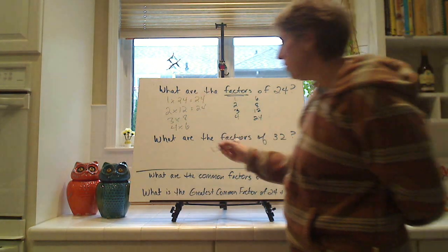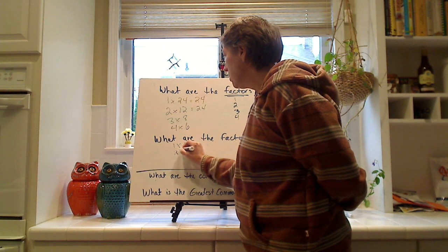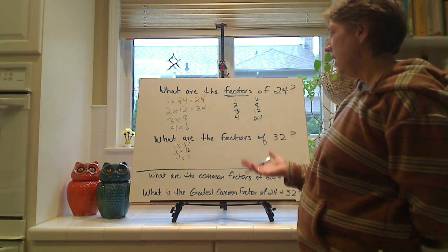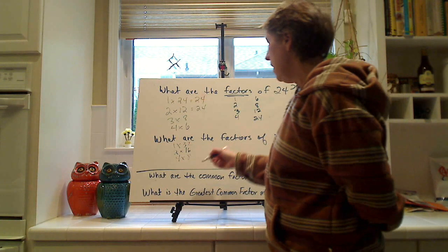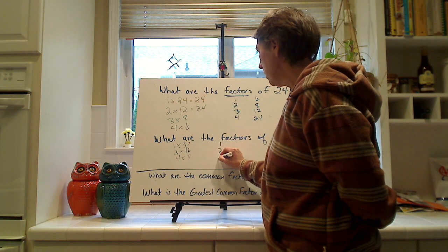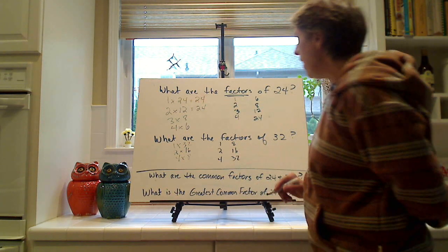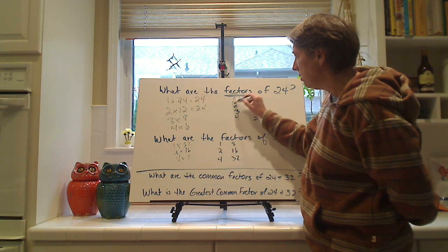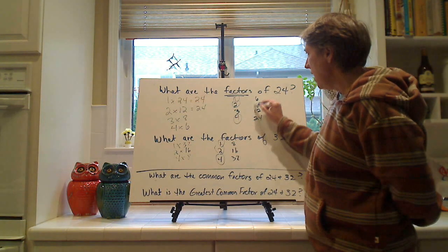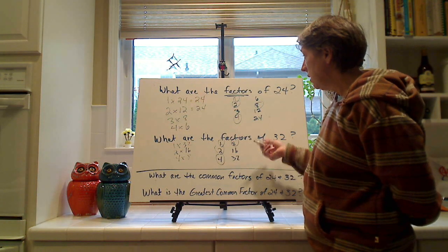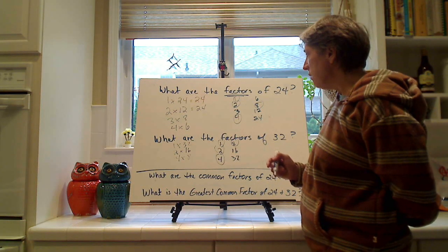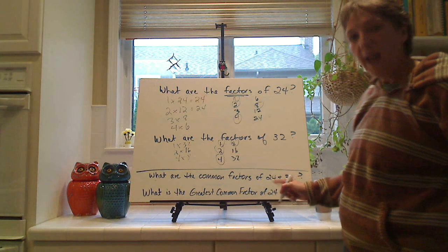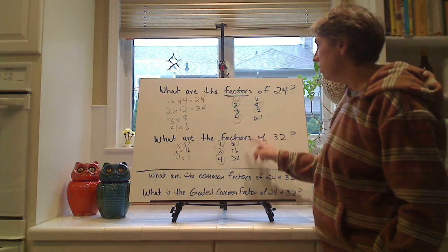If I said what are the factors of 32, you'd write them out: 1 times 32, 2 times 16, 4 times 8. Now, we're starting to repeat, so we don't rewrite it. And then we put them in order: 4, 8, 16, and 32. If I ask you what are the common factors between them, 1 is a common factor, 2 is a common factor, 4 is a common factor, and 8 is a common factor, and that's it. So, what's the greatest common factor between the two? 8. The GCF would be 8. The greatest common factor between the two would be 8.